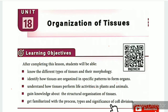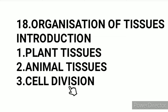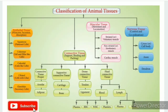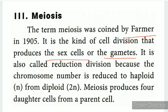Get familiarized with the process, types, and significance of cell division. These are the learning objectives. There is also a QR code link available in the description box, as well as in the unit section. This lesson covers three total topics: plant tissues, animal tissues, and the third topic — cell division, including classification of plant tissues and animal tissues.